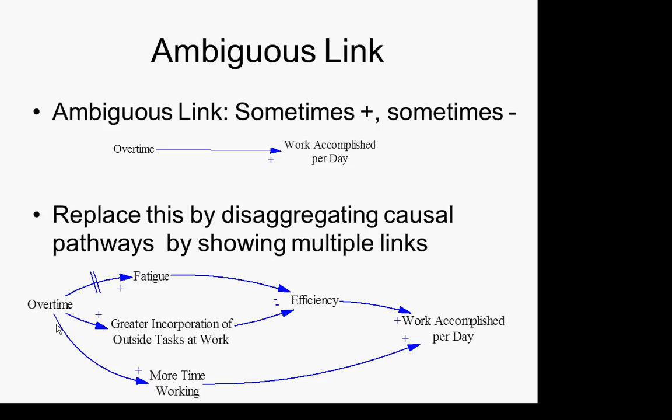Now consider the upper pathway through fatigue. You increase overtime — will that tend to increase or decrease fatigue? Increase. And will increased fatigue tend to increase or decrease efficiency? Decrease. And if you were to decrease efficiency, would it lead to greater or lesser work accomplished per day? Lesser. So there's a net negative path along that top line. We can figure out the polarity of the path by simply multiplying the polarities of the individual links: two positive links and one negative link yield a net negative path.